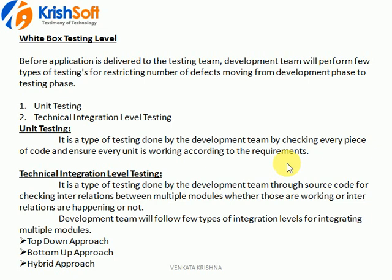Unit testing is something like testing every piece of code, whether it is working according to the requirement or not. The development team does white box testing, so we as testers don't need to be deeply aware of how they do it. This is just for your knowledge - how the development people are doing testing. Usually white box testing is done by the development people, and there are two levels: unit testing and technical integration level testing.